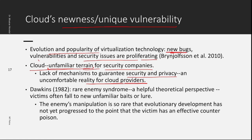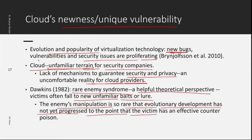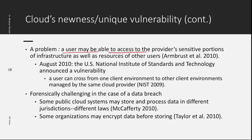Dawkins' rare enemy syndrome provides a helpful theoretical perspective: victims often fall for new, unfamiliar baits or lures. The enemy's manipulation is so rare that evolutionary development has not yet progressed to the point where the victim has an effective counter. A related problem is that a user may be able to access sensitive portions of the provider's infrastructure as well as resources of other users.